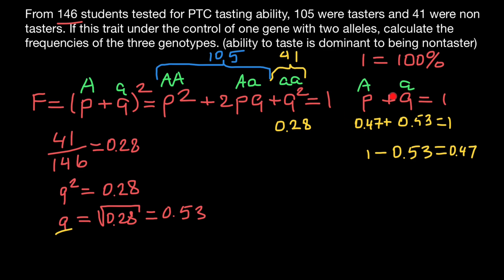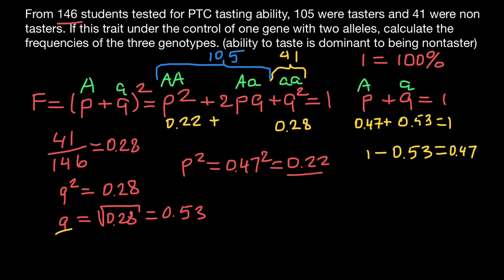Now that we know the frequency of both alleles, our calculations are straightforward. The frequency of the homozygous dominant genotype, p², equals 0.47 squared, which gives us 0.22. So 0.22 is the frequency of the homozygous dominant genotype.